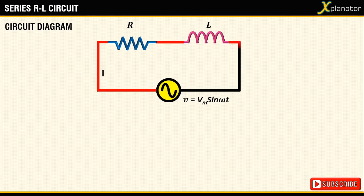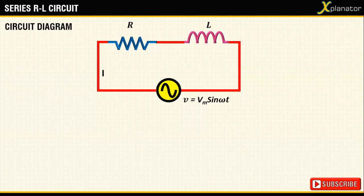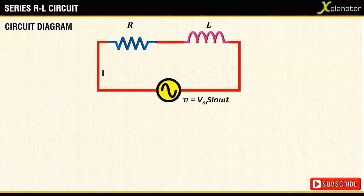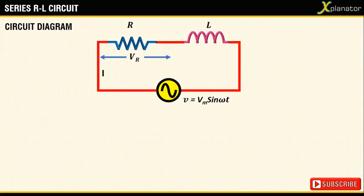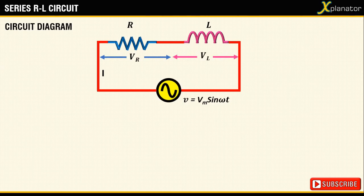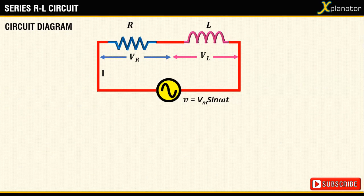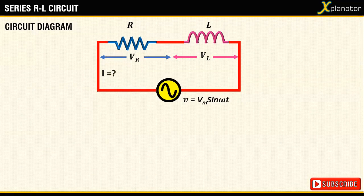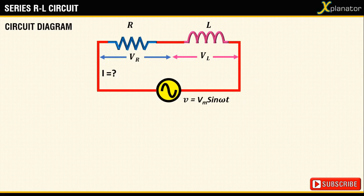When current passes through a resistor, it generates a voltage Vr and when it passes through an inductor, it generates a voltage Vl. We have to find an equation for this current. For this, we take the help of the phasor diagram.